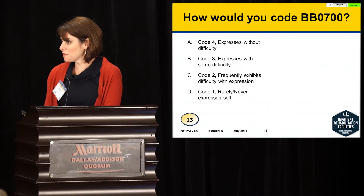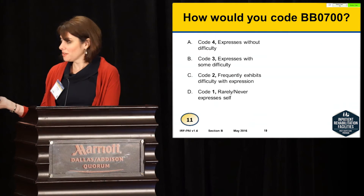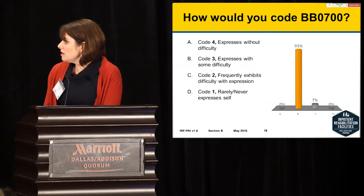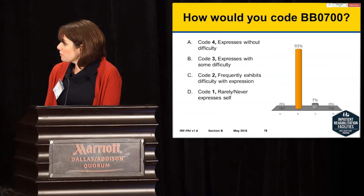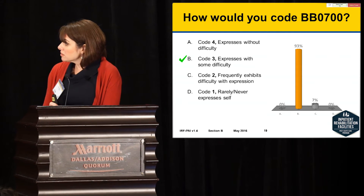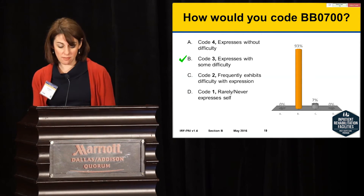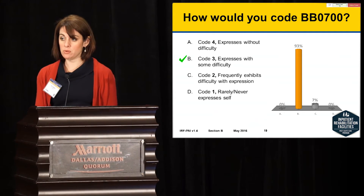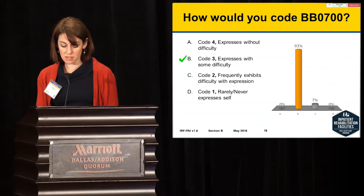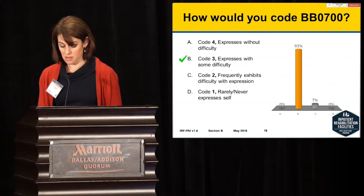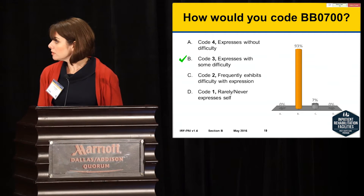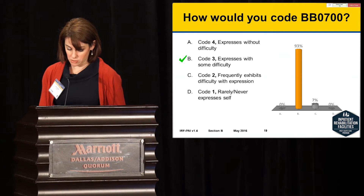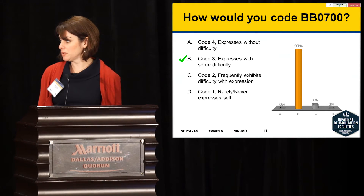93% correctly identified that Mr. P would be a code 3. BB0700 would be coded a 3 for this scenario. Mr. P had some word-finding problems resulting in some difficulty expressing his needs and ideas. If he frequently had problems, then he would be a 2 — that's the difference between a 2 and a 3.